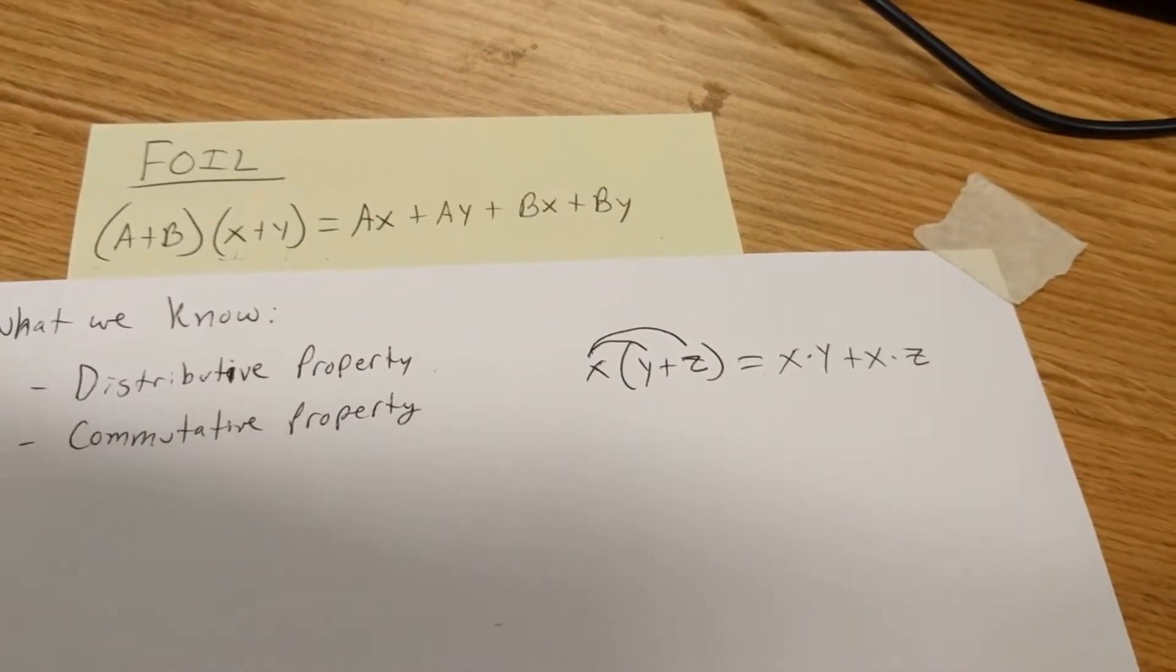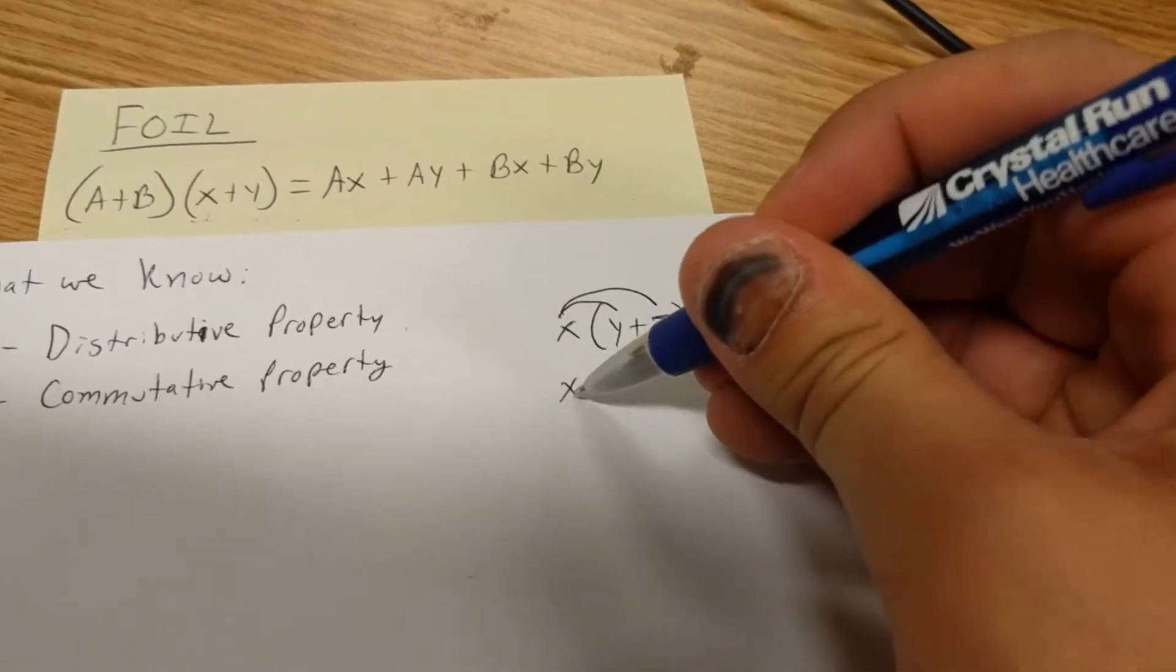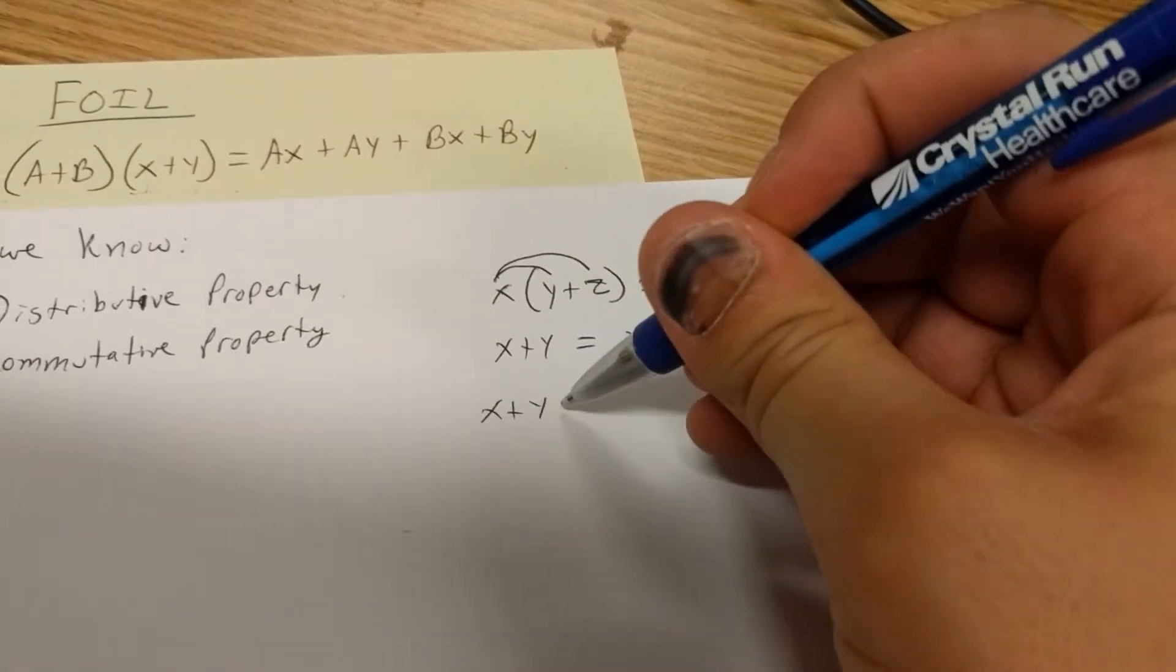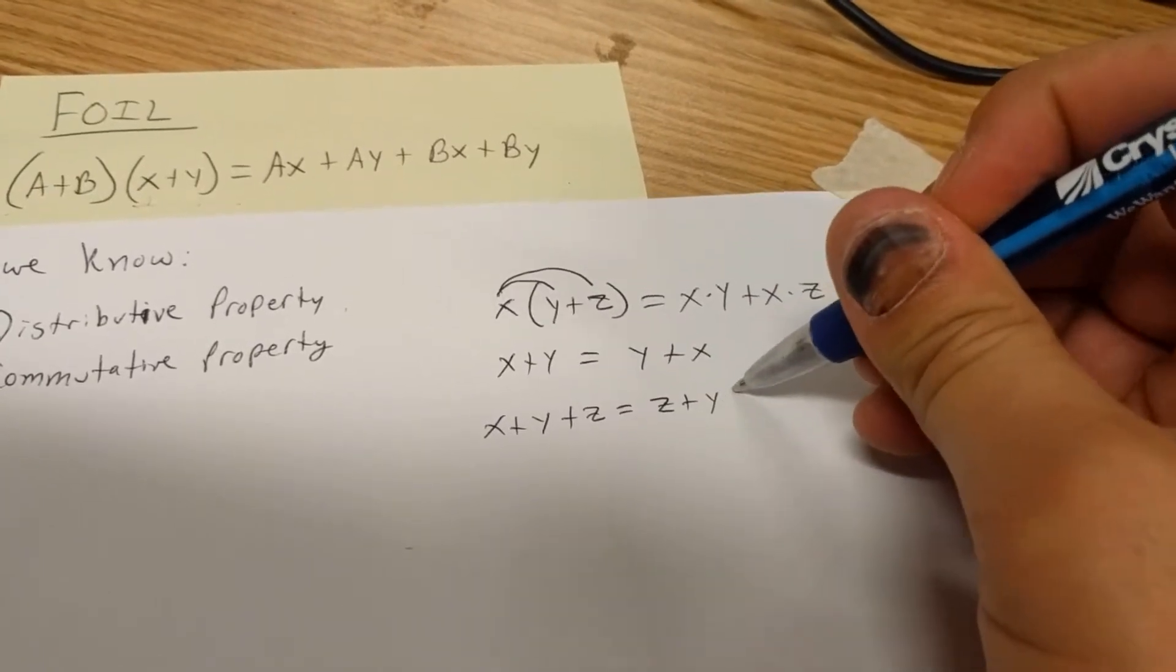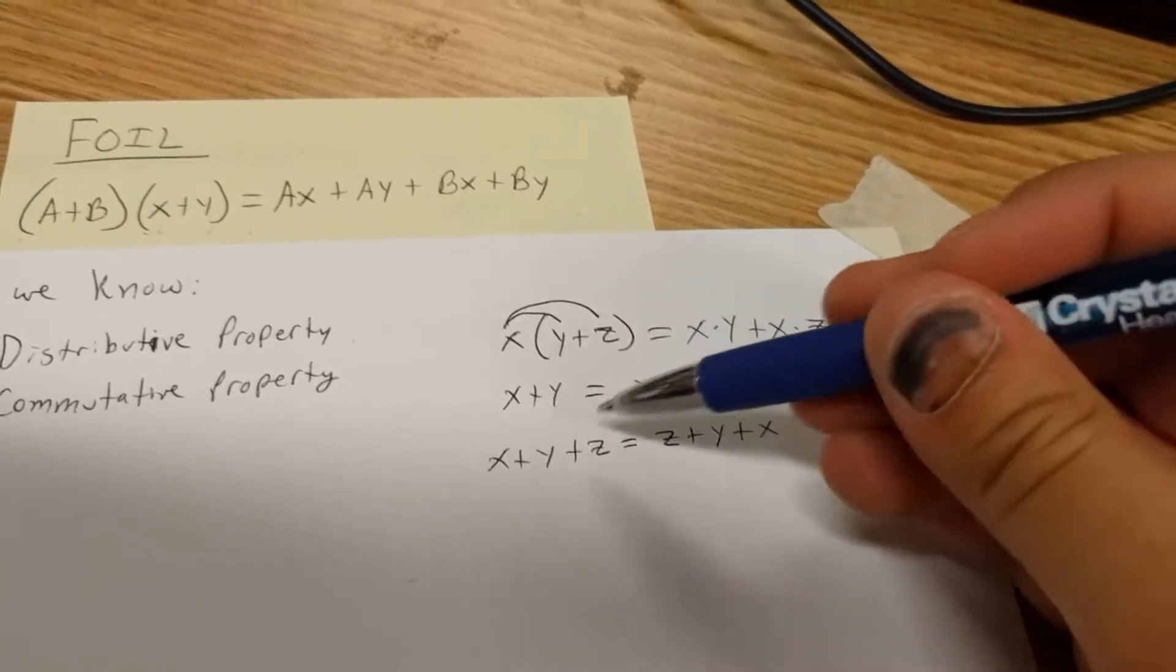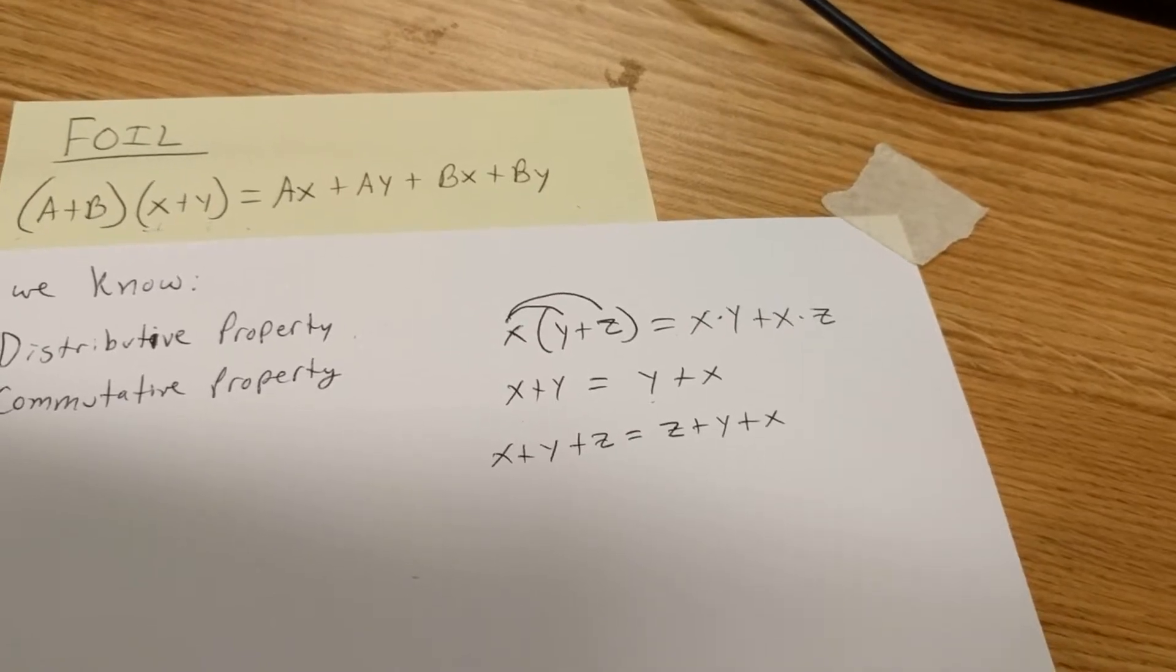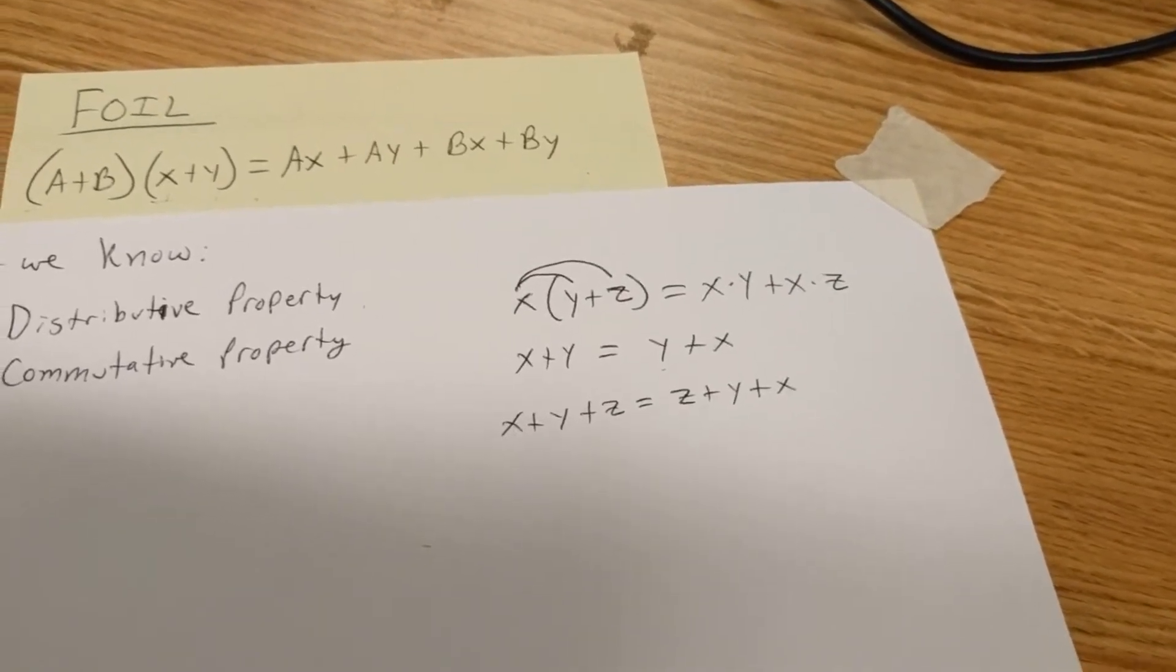That's the first thing we know. The second is the commutative property. We know that x plus y equals y plus x. We could extend that further: x plus y plus z equals z plus y plus x. We can rearrange however we want, because the order of operations under addition or multiplication don't really matter as long as we're not doing both operations at the same time. These will both be valuable for this proof.